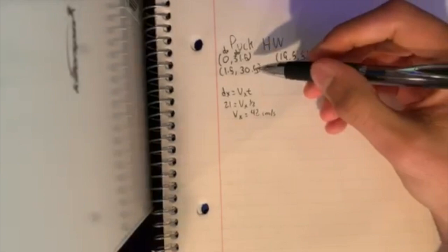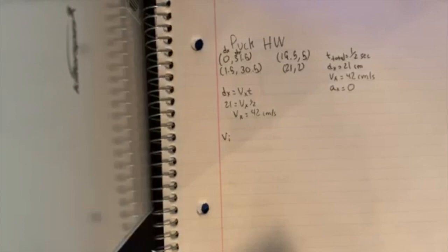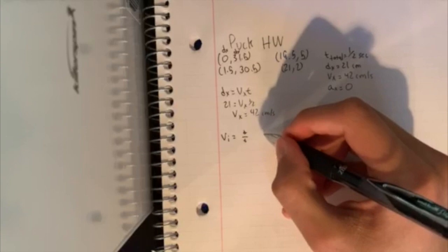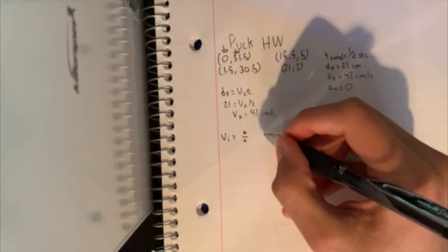v-initial, if you were to think about it visually, it would be the hypotenuse of the triangle. You would use the distance formula to find the distance divided by time. So the distance equals the square root of 1.5 squared plus 1 squared, which equals around 1.8 centimeters.